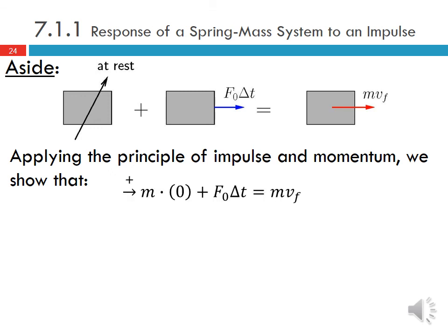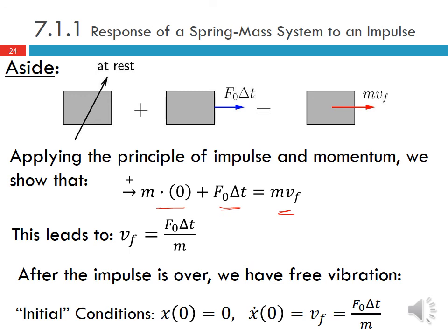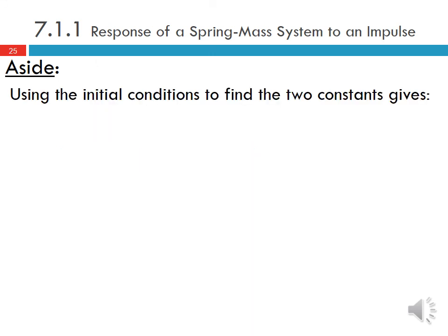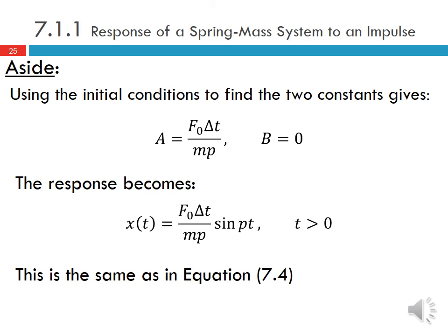Applying the principle of impulse and momentum: m·(0) + F₀·ΔT = m·v_F, so v_F = F₀·ΔT/m. After the impulse, we have free vibration with initial conditions of zero displacement and velocity F₀·ΔT/m. Using these initial conditions to find the constants gives A = F₀·ΔT/(mp) and B = 0. The response becomes x(t) = F₀·ΔT/(mp) · sine(pt) for all t greater than zero — the same result as equation 7.4.